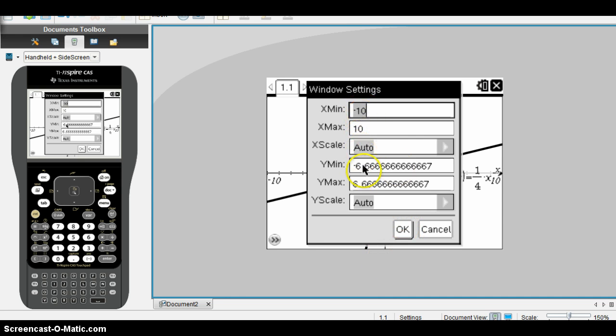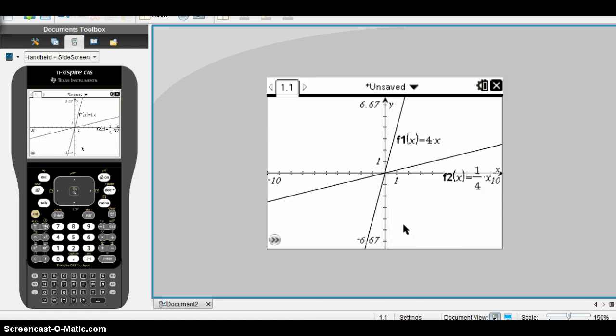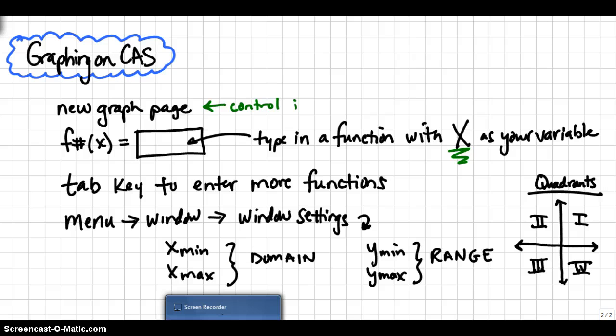So if we were to change those values, it would modify the look of the graph. To help students a little bit further with their graphing, your domain will be affected in the window settings by Xmin and Xmax, the range by Ymin and Ymax.